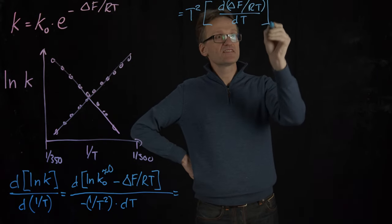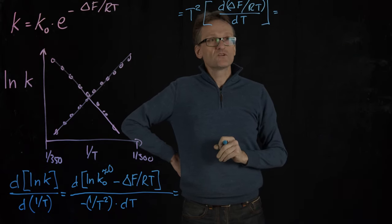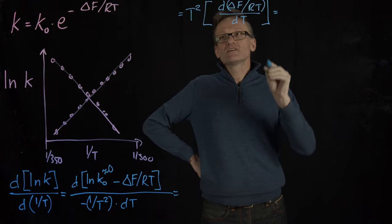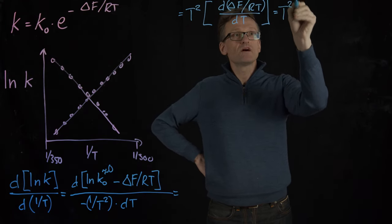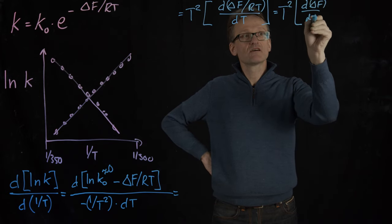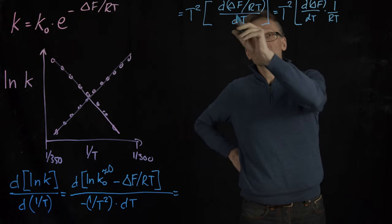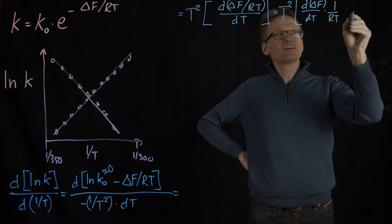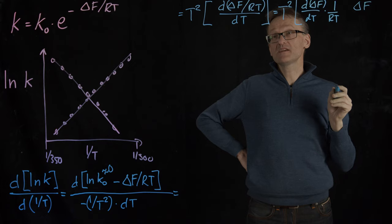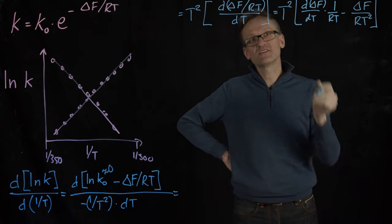This is still a non-trivial expression but it's not that bad anymore. That's a derivative of a quotient. We have delta F and then divided by RT. But to make that slightly easier, we can think of that as delta F multiplied by 1 over RT. So that is going to be T squared multiplied by first the derivative of delta F with respect to T multiplied by 1 over RT, plus that's going to be minus 1 over RT squared.